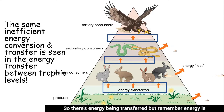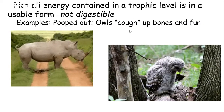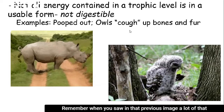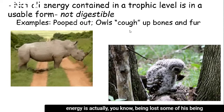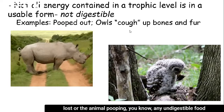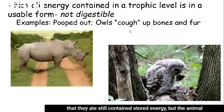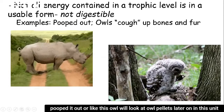Energy is being transferred, but remember, energy is also being lost along the way between every single trophic level. Not all of the energy contained in a trophic level is actually usable. Some of it is lost due to the animal pooping — any undigestible food that they ate still contained stored energy, but the animal or other organism was not able to use it, so they excreted it.